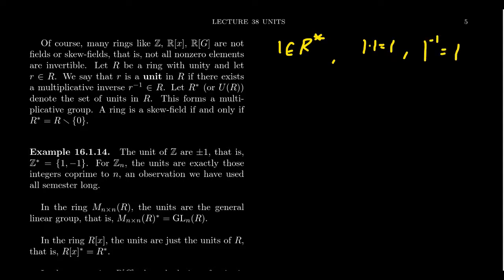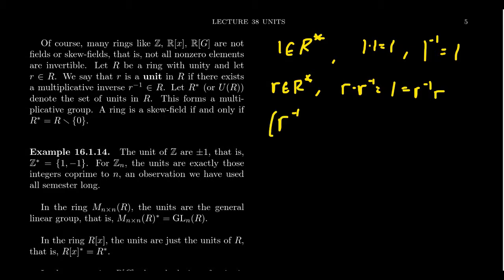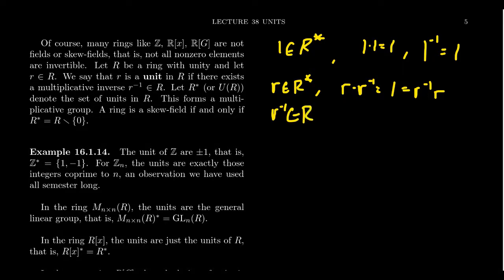If r is inside of R-star, that means r times r-inverse equals one, which equals r-inverse times r. In particular, r-inverse necessarily has an inverse as well — that's just r, by the uniqueness of inverses, which comes from the associativity axiom. So if r is in R-star, then r-inverse is in R-star as well. The set of units is closed under multiplicative inverses.